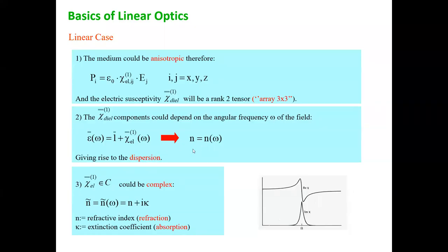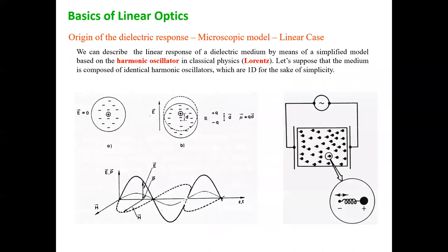We want to ask ourselves why there should be dispersion of the refractive index and why the refractive index should be complex. To do this, we start from a very simple model — the so-called harmonic oscillator model that was proposed for the first time by Lorentz.